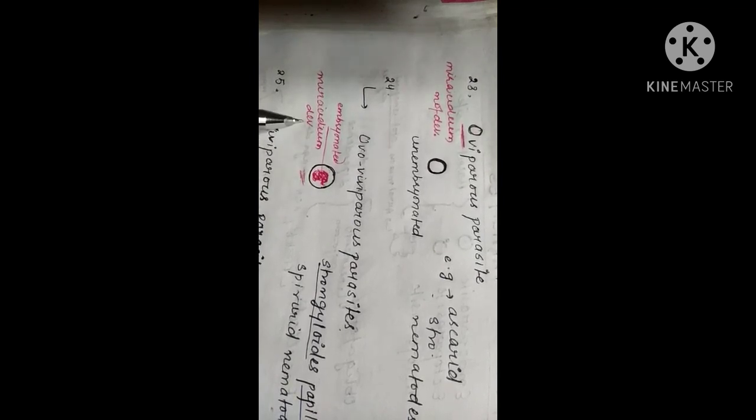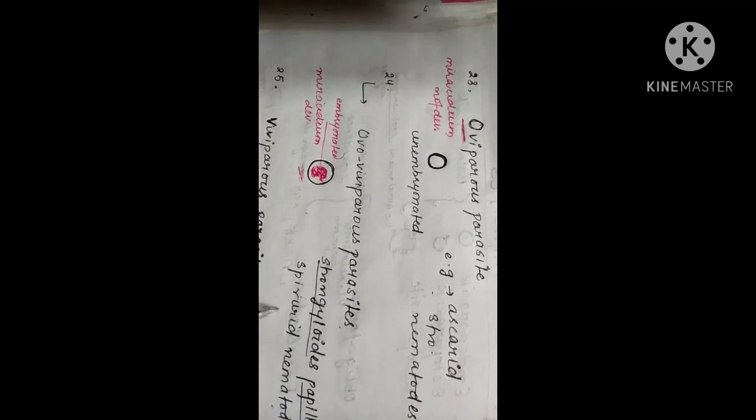The next is ovoviviparous parasite. Ovoviviparous parasites are those parasites which lay eggs, but their eggs are embryonated — meaning their eggs contain an embryo. Like miracidium is developed in the case of trematodes. Examples of ovoviviparous parasites are strongyloides, Papillosus, or spirurid nematodes.